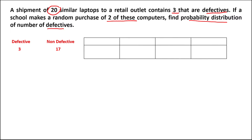To create a probability distribution for the number of defectives, we let X be the number of defectives. Since the school purchases 2 computers, the possible values are: no defective computer, one defective computer, or both computers are defective.